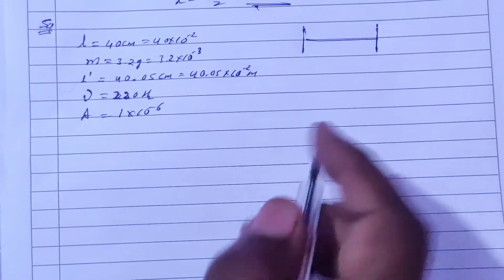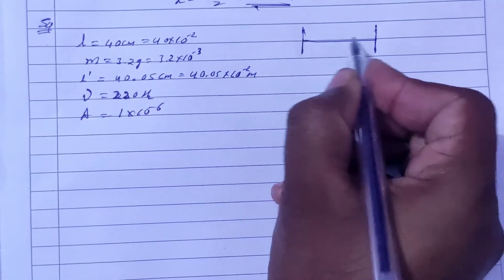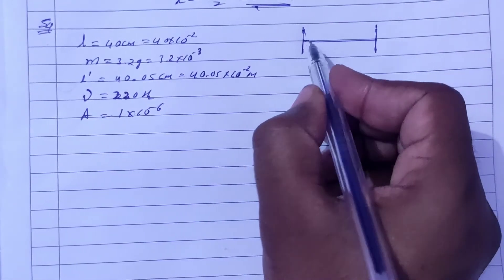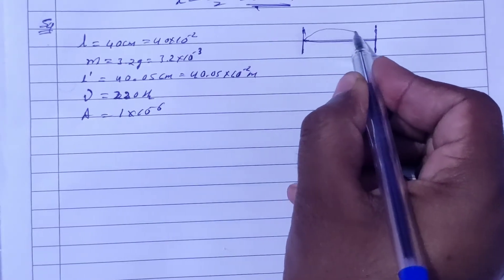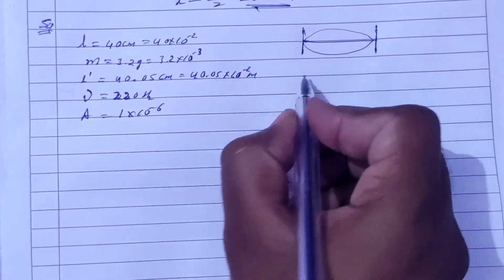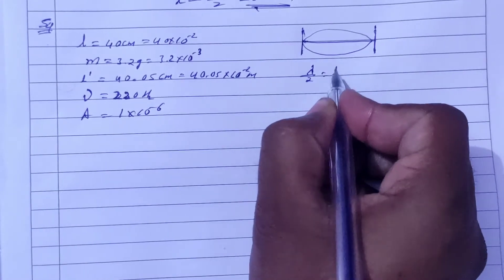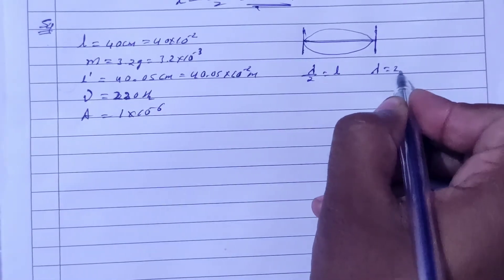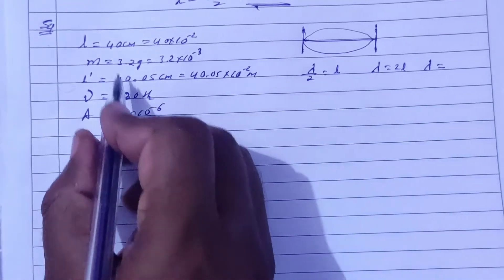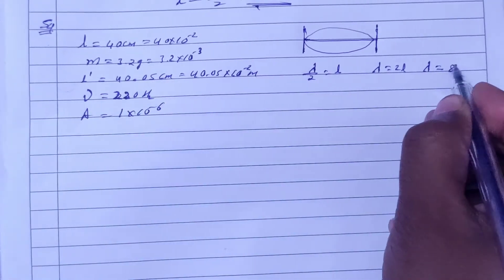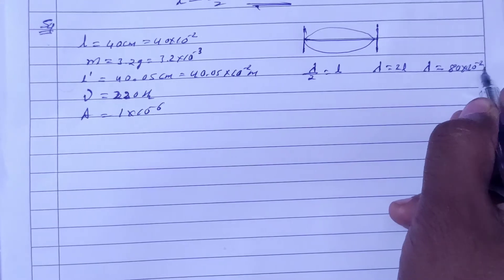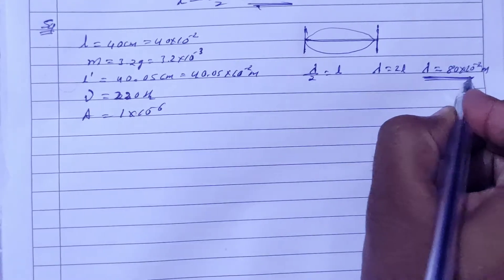This string is fixed and it is in the fundamental mode. The fundamental mode means that it forms one loop. This means lambda by 2 is equal to length, so lambda is equal to 2L. Lambda is equal to 2 times 40 cm, which is 80 cm, or 80 × 10⁻² meters. This is the wavelength.